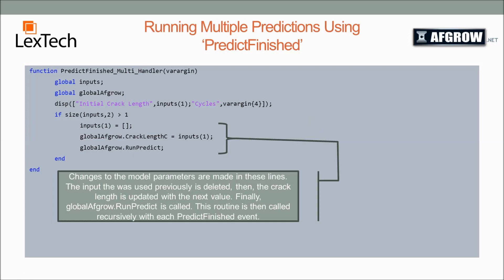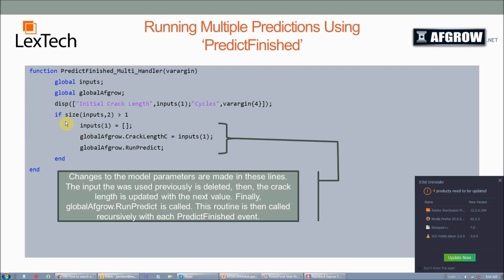Here's the event handler for that multiple prediction run. As you can see, we need to define these two variables as global so that we can access them. And then we simply output the initial crack length, which will be the first thing in the array, and then the cycles, which is the fourth element in varargin. Here we just check to make sure that the array isn't empty. If it isn't, we go in here and we set the first element of the array to null. This effectively shifts all of the elements of the array left one, and then our first element of the array will now be what was the second element of the array. Then we set the crack length to the new first element of the array, and we run the prediction again, which will in turn trigger this event handler, and so on, until the program is finished.